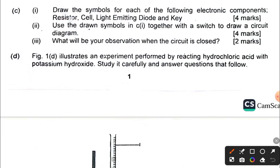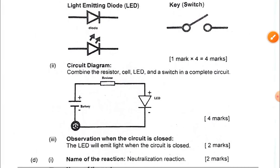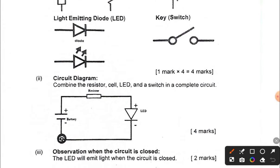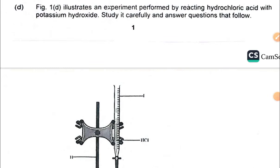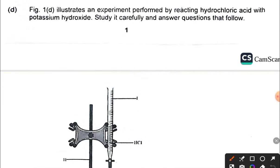For question 1c, you are asked to draw the following: a resistor, a cell, a light emitting diode, and a key. You then use what you have drawn to form a circuit diagram. Here are the diagrams. This is your whole circuit diagram, and the observation is that the LED would emit light when the circuit is closed.